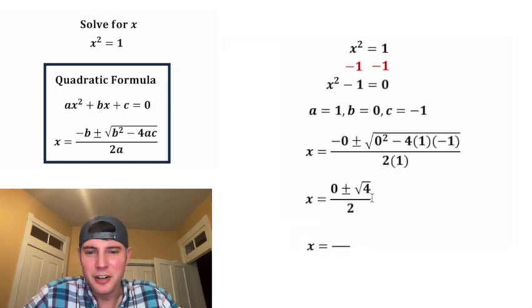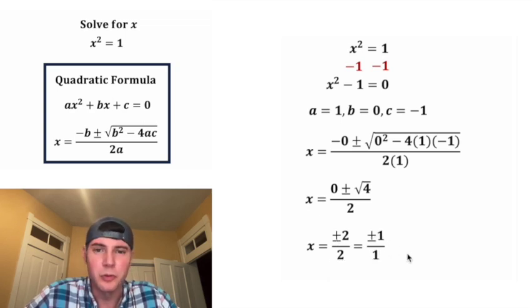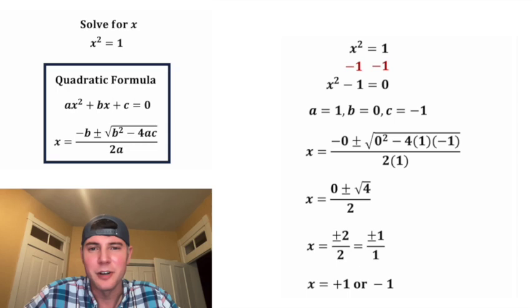We can simplify this further. The 0 isn't really doing anything. And then square root of 4 is equal to 2, so we can call this plus or minus 2. And then it's still divided by 2. And we can simplify this into plus or minus 1 over 1. Or we can say x equals positive 1 or negative 1.